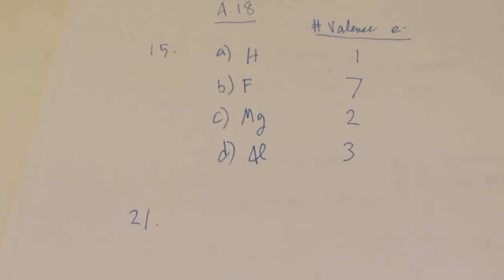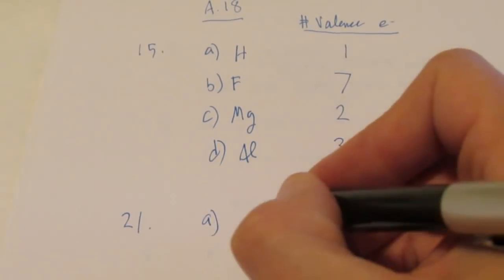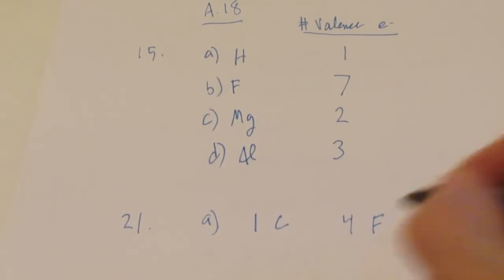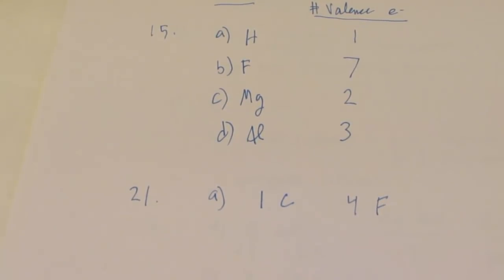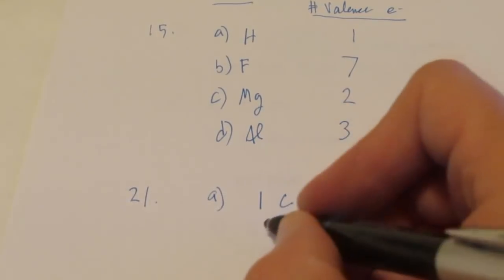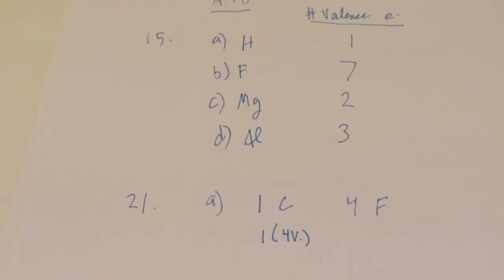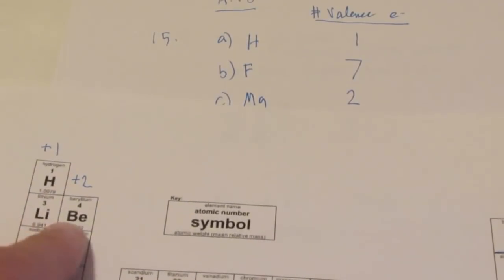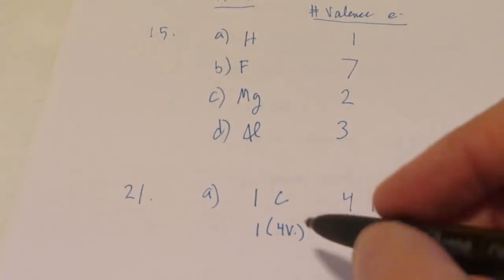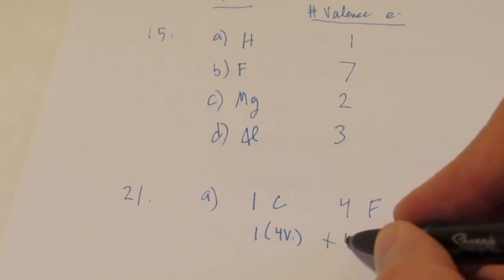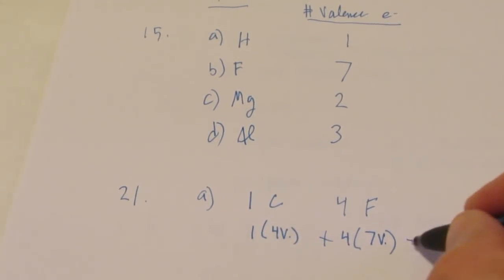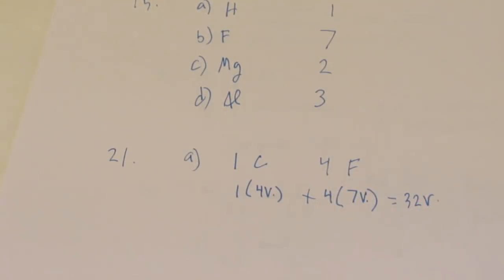That takes us to number 21, which reads, draw Lewis structures for each of the following. Letter A, we have one carbon atom and four fluorine atoms. The way we do that is we first find out how many valence electrons we have to work with. Each carbon atom has 4 valence — it's in group 14 with configuration ending in 2s², 2p². Fluorine, there are 4 of them, in group 17 with 7 valence each. So I have a total of 32 valence electrons to work with when I draw the Lewis structure.